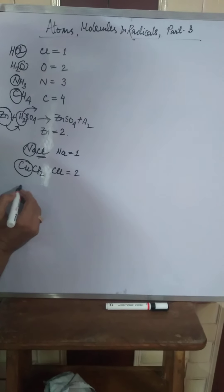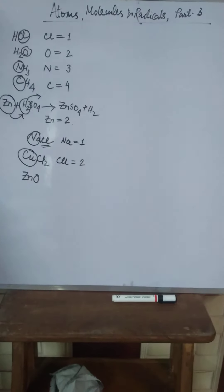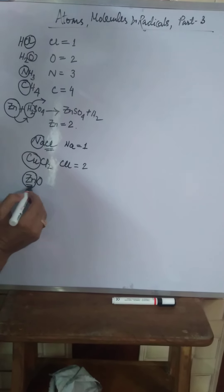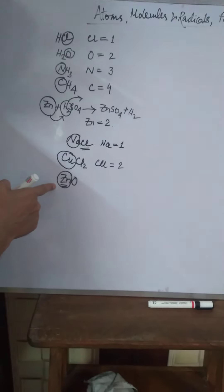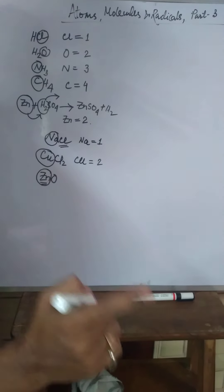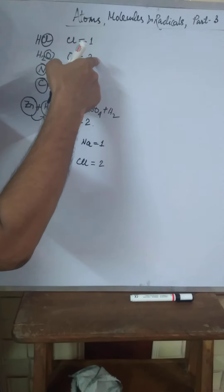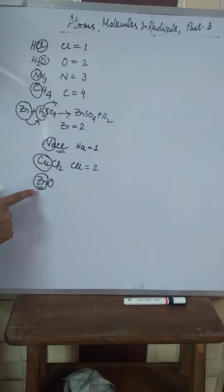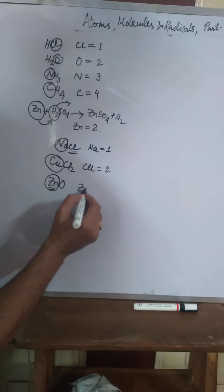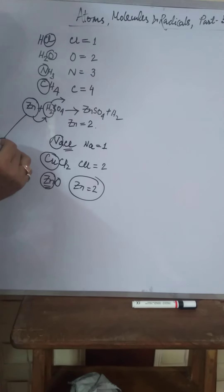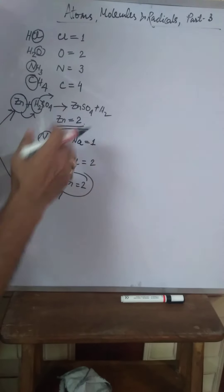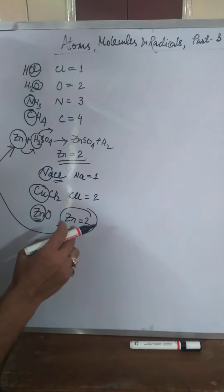Take another example — ZnO, that is zinc oxide. You find that one atom of zinc is attached with one atom of oxygen. What is the valency of oxygen? Two. And that's why, since one atom of zinc is attached with one atom of oxygen and the valency of one oxygen atom is two, the valency of zinc is two. And you see the parity — the displacement reaction also shows the valency of zinc as two, and this example confirms it another way. The valency of zinc here is also two.